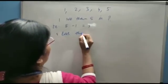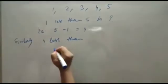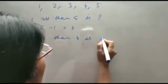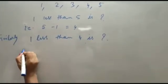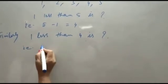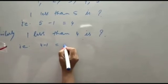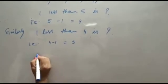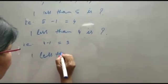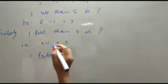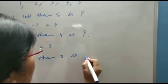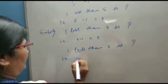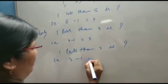Similarly, 1 less than 4 is what? That is, 4 minus 1 equals 3. Again, 1 less than 3 is what? That is, 3 minus 1 equals 2.